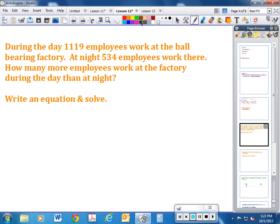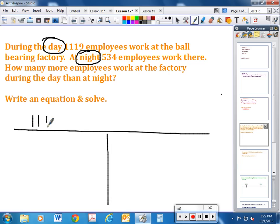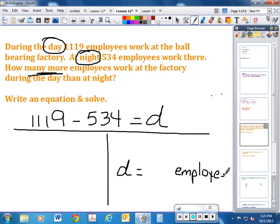During the day, 1,119 employees work at the ball bearing factory. At night, 534 employees work there. How many more employees work at the factory during the day than at night? Well here, you're talking about daytime workers and nighttime workers—that's the two things you're comparing. And according to our pattern, we want the larger one first. So we want 1,119 minus the smaller group, and they want to know how many more, so that's your letter. And you would solve it by subtracting, and then your answer would be D equals whatever the number is, and your label—don't forget your labels—would be employees.